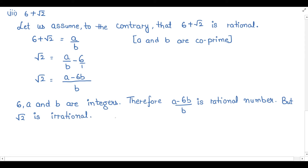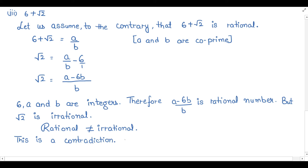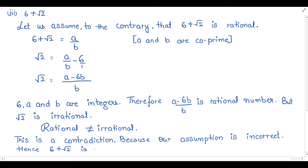A rational number can never equal an irrational. So a contradiction arises here. This is a contradiction. The contradiction arises because our assumption was incorrect. Our incorrect assumption was that 6 plus under root 2 is a rational number. Hence, if it is not rational, then 6 plus under root 2 is an irrational number.